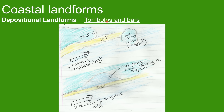Next are tombolos and bars. A tombolo is where an island is connected to a headland by a spit — the direction of longshore drift has moved the spit across and the sediment hasn't gone round. A bar is where an old bay is turned into a lagoon because the sediment moves straight across the bay and forms a bar.